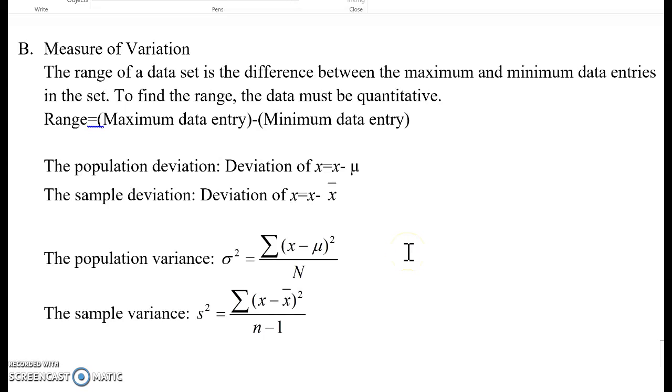Measure of variation. The range of a data set is the difference between the maximum and minimum data entries in the set. To find the range, the data must be quantitative.